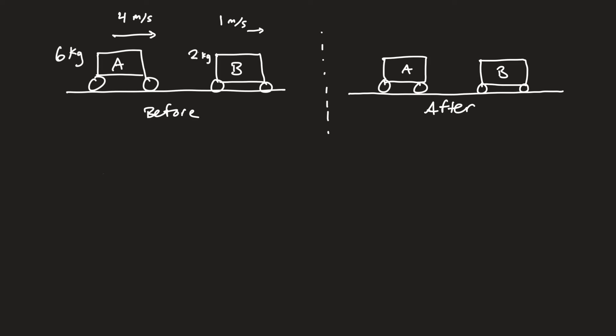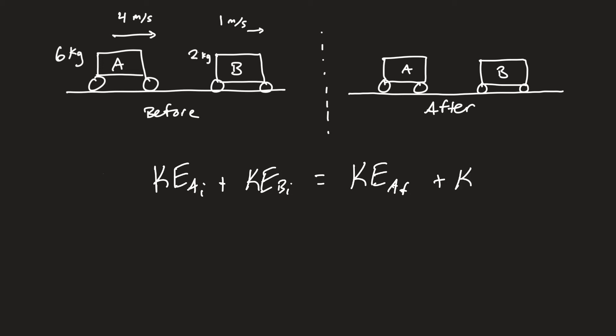We can write out the primary mathematical condition for elastic collisions. In simpler terms, kinetic energy before and after is the same: KE_A_initial + KE_B_initial = KE_A_final + KE_B_final. Expanding, that's one-half m_A v_A_initial squared plus one-half m_B v_B_initial squared, and so on — a pretty horrendous-looking equation, but it's true only for elastic collisions.